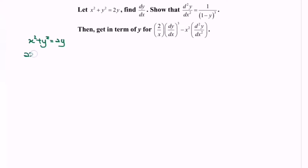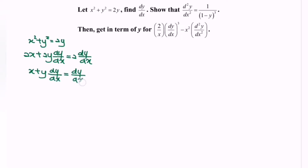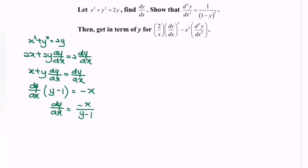Differentiating gives us 2x plus 2y dy/dx equals 2 dy/dx. Simplifying: x plus y dy/dx equals dy/dx. Rearranging and factoring out dy/dx, we get dy/dx multiplied by (y minus 1) equals negative x. So dy/dx equals negative x over (y minus 1), or equivalently, dy/dx equals x over (1 minus y).